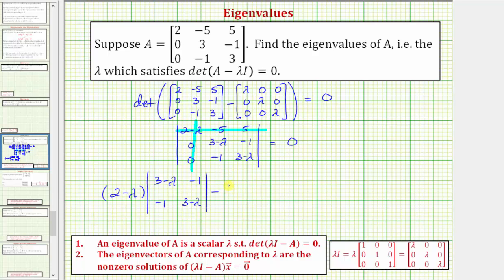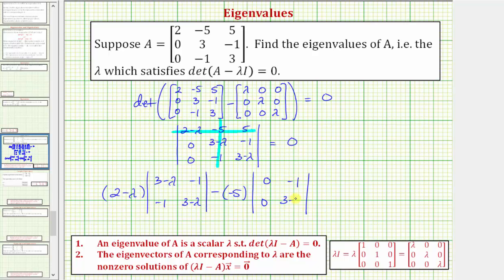Then we subtract: the next element in row one is negative five, times the minor formed by eliminating row one, column two — giving us elements zero, negative one, zero, three minus lambda. Then we add: the last element in row one is positive five, times the minor formed by eliminating row one, column three — giving us zero, three minus lambda, zero, negative one. And this must equal zero.